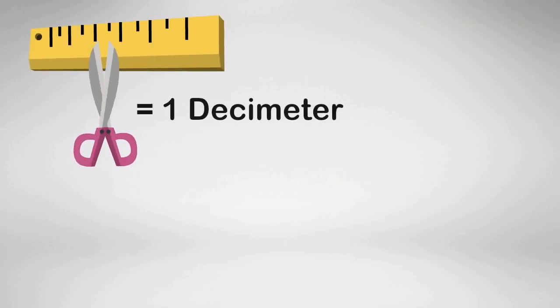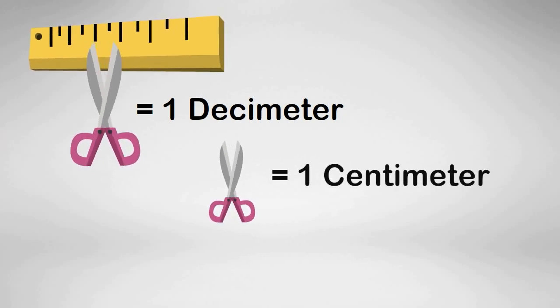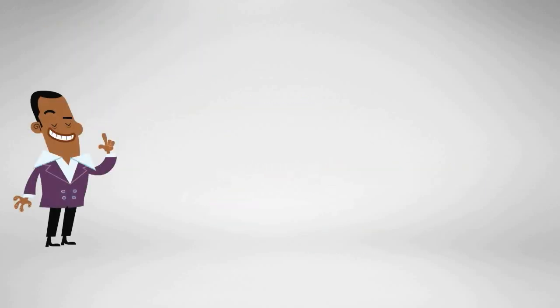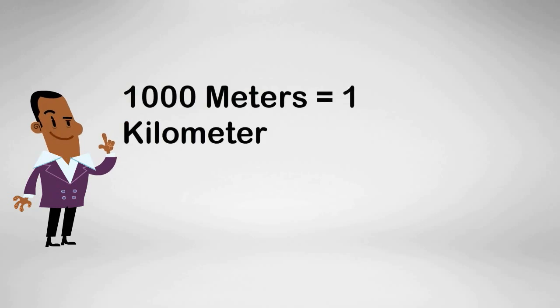If you then divide the meter into 10 equal parts, you have 10 decimeters. If you divide the decimeter into 10 equal parts, you have a centimeter. If you subdivide the centimeter into 10 small parts, you have a millimeter. On the other hand, if you have 1000 meters, you have 1 kilometer.